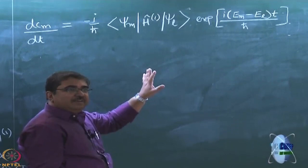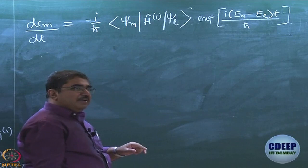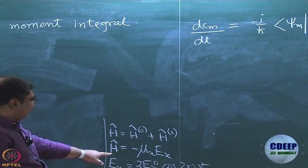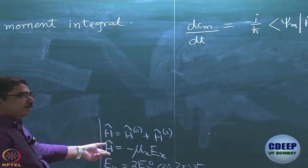The next step is to use the expression for the first-order correction to the Hamiltonian, which is –μx times Ex. We put it into that expression and see how it evolves — that is what we are going to do now.